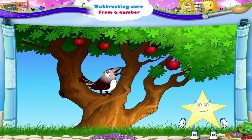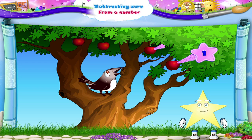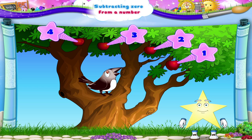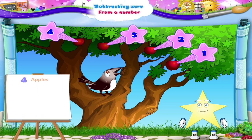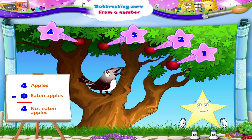Now, look at the apples on this tree. Let's count them. One, two, three, four apples. Are any of them eaten? None. So, zero apples have been eaten. The number of apples that have not been eaten is four apples.